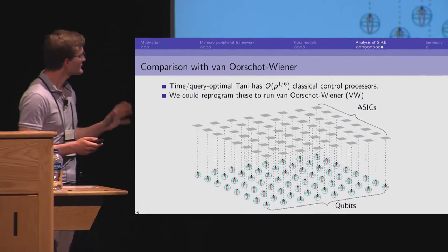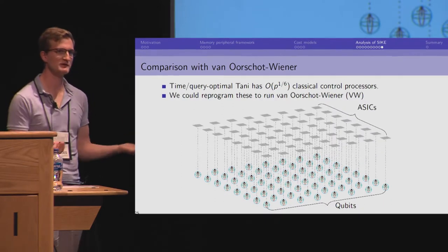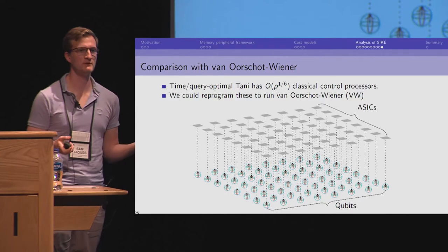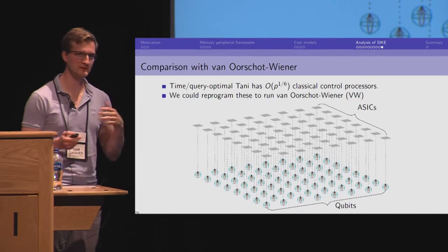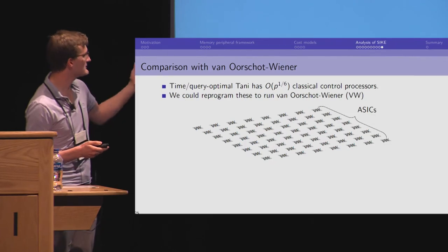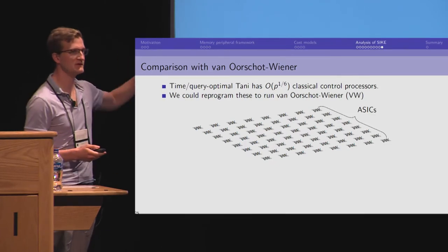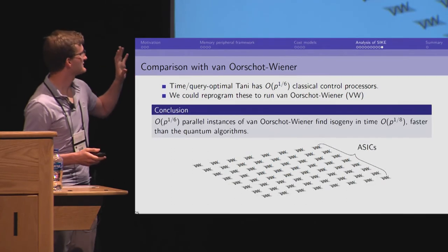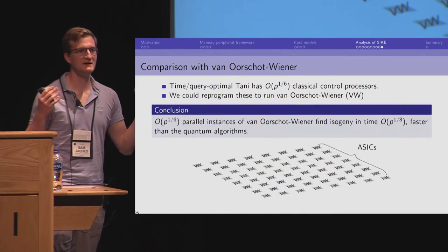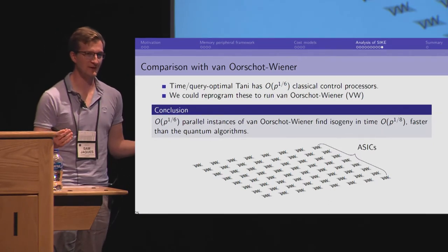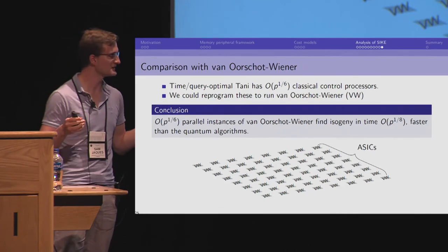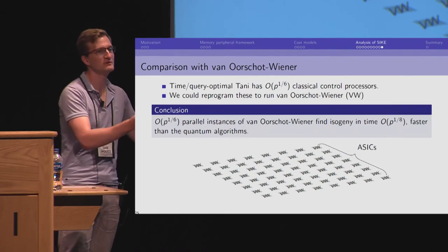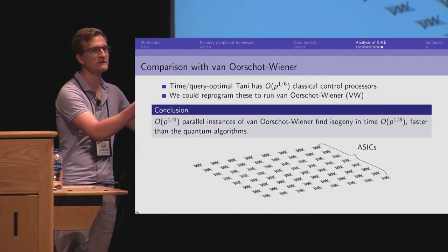But it's actually even worse because, if you remember, a quantum computer has a classical controller. And so, it will have P to the 1/6 classical control processors associated to all the qubits. What if instead of running the quantum algorithm, we turned the qubits off and we repurpose the controllers to run van Oorschot-Wiener. So, this is a lot of classical controllers. This is P to the 1/6. When they run van Oorschot-Wiener, they will find the isogeny in time P to the 1/8. So, our conclusion here is that if you had an adversary who actually built this enormous quantum computer to run Tani's algorithm, they have implicitly built such a large classical computer to run this quantum algorithm that they'd be better served just using the classical computer to begin with.